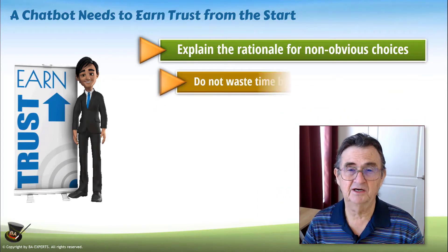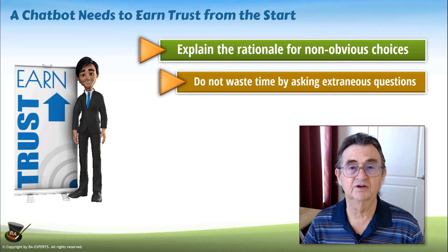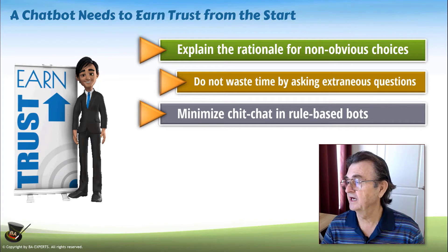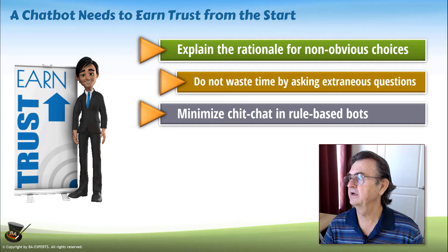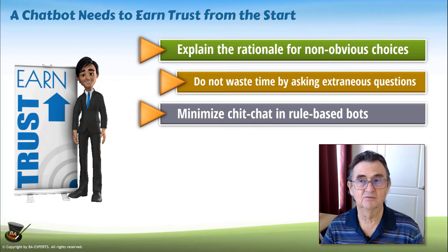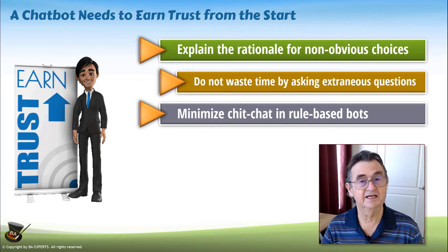Above all, make sure that your bot doesn't waste the visitor's time by asking extraneous questions or things that are outside of the goal of the bot. There is a theory about designing chatbots with AI where you try to make them quasi-human, so they have a lot of chit-chat. Chit-chat is very important in human interaction; however, if you're dealing with a rules-based bot, you should minimize chit-chat because the bot is not intelligent enough to make convincing chit-chat. That would be in the domain of AI NLP bots, but not rules-based chatbots.